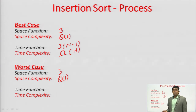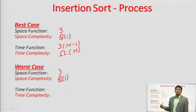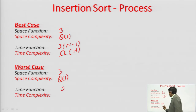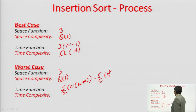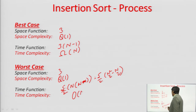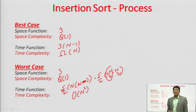In the worst case, all iterations are performed and in each iteration the number of comparisons equals the iteration number. The time function is (5/2) × n × (n−1), which equals (5/2)(n² − n), written as O(n²) since n² is the higher degree term.